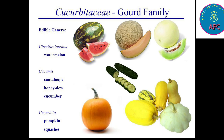The next important family is Cucurbitaceae, also called the gourd family. The crops and fruits under this family are watermelon, muskmelon, cucumber, pumpkin, and squash — all these crops come under the Cucurbitaceae family.